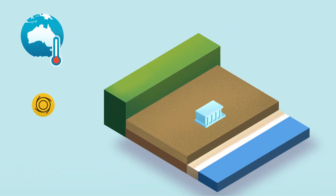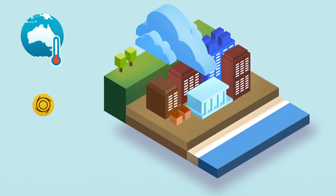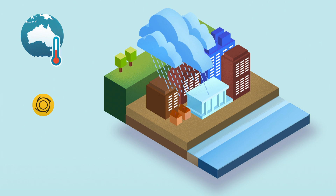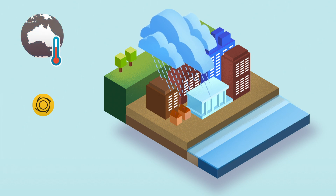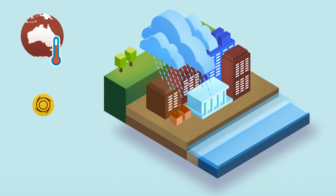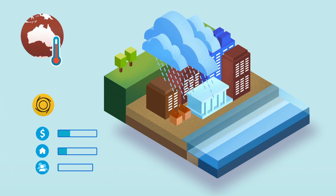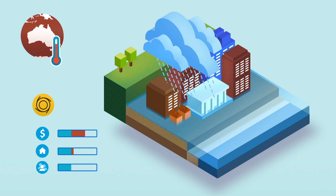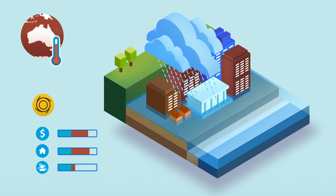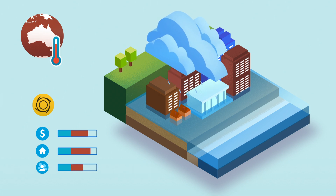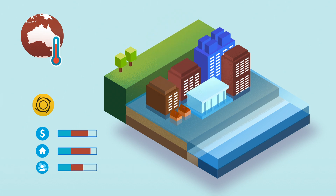Climate change brings rising sea levels and more intense rainfall. These can increase flooding from coastal storms and tropical cyclones, and we can estimate how much of their impacts result from climate change.